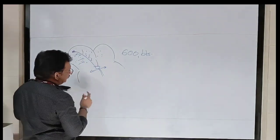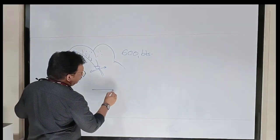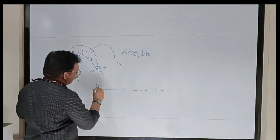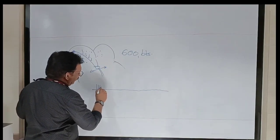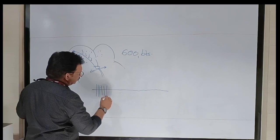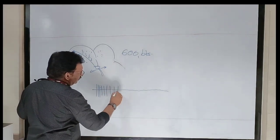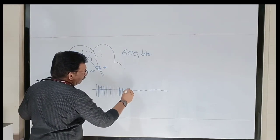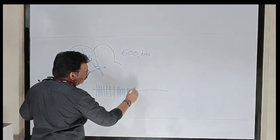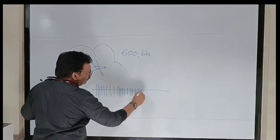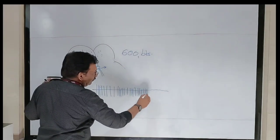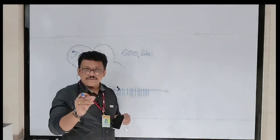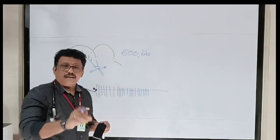In atrial fibrillation you see a wavy baseline — no P waves — then QRS complexes that are very fast and irregular. The space between QRS complexes is irregular: some parts narrow, some wide, and you cannot predict when the next one will come. The RR interval will be varying — that is atrial fibrillation.